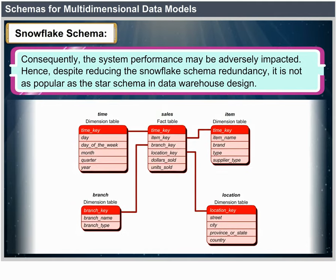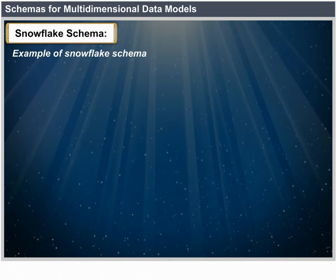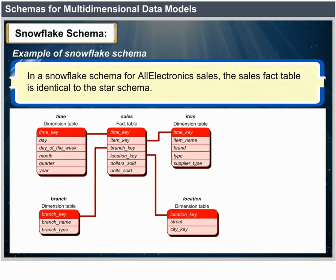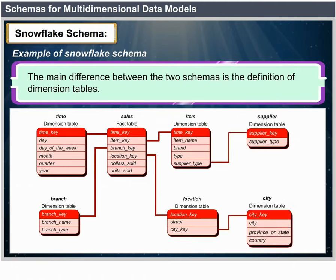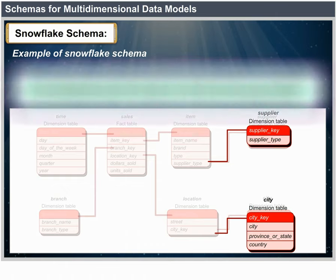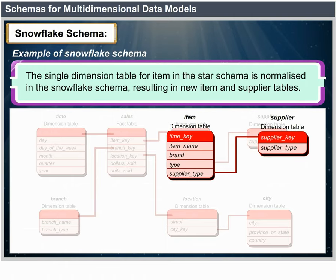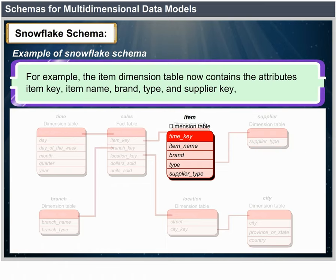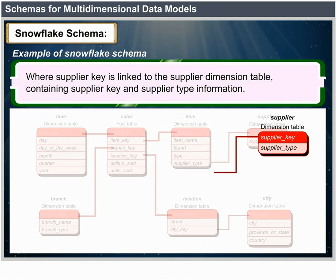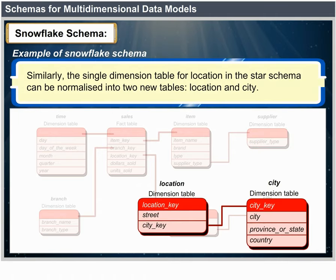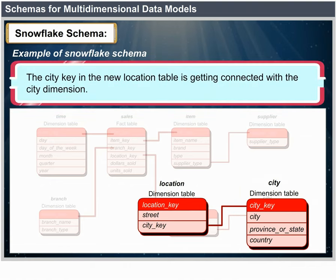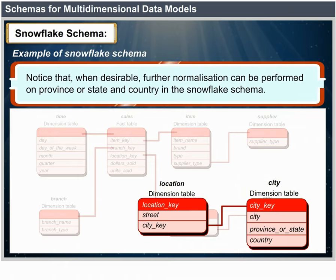Example for snowflake schema: In a snowflake schema for electronic sales, the sales fact table is identical to that of the star schema. The main difference is in the definition of dimension tables. The single dimension table for item in the star schema is normalized in the snowflake schema, resulting in new item and supplier tables. The item dimension table now contains item_key, item_name, brand, type and supplier_key, where supplier_key links to the supplier dimension table containing supplier_key and supplier_type information. Similarly, the location dimension table can be normalized into two new tables — location and city — with city_key in the new location table linking to the city dimension. Further normalization can be performed on province, state or country.